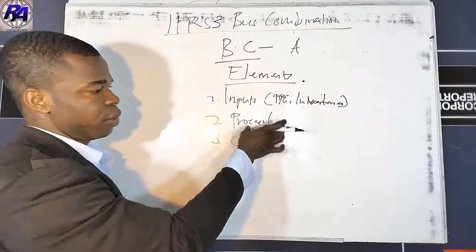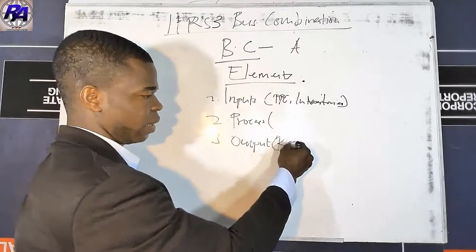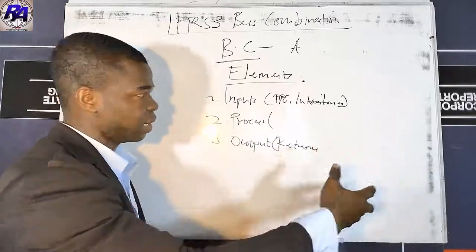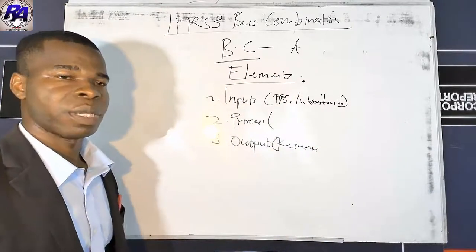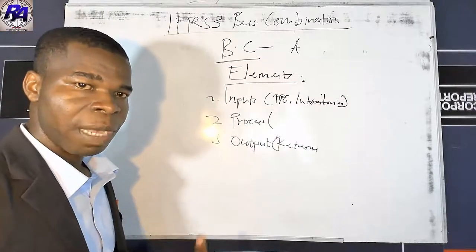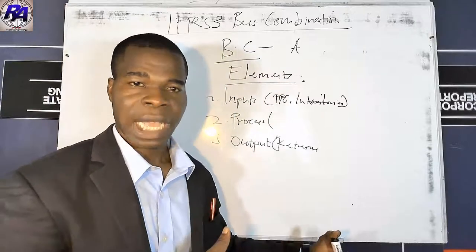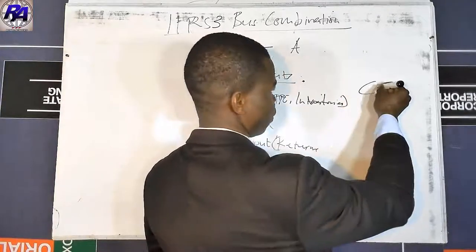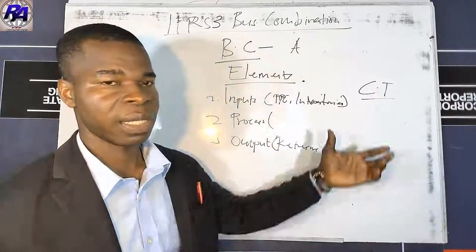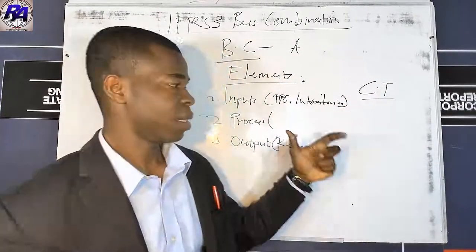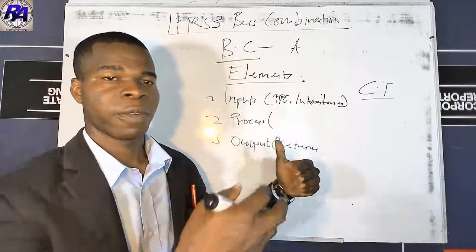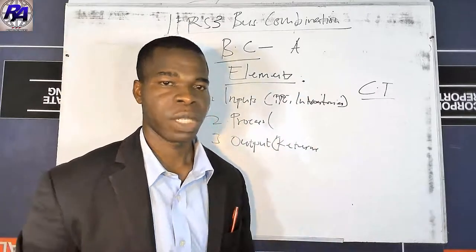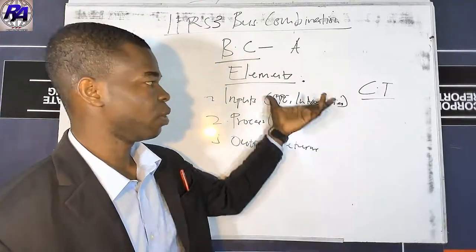The third element is output — the end result of the input and process, looking at returns in the form of dividends or interest. To identify an acquisition as a business combination, all three elements — input, process, and output — must be present. When it is still difficult to determine, the standard prescribes an optional concentration test. We only go through these elements when we cannot readily determine from the outset that the acquisition is a business combination.